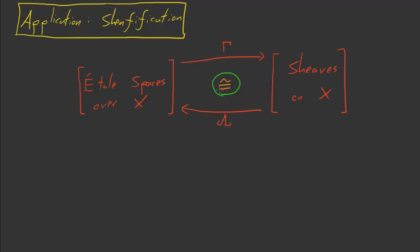I suppose they're useful for a lot of things, but one thing they're very useful for is taking categorical problems, constructions, observations, etc. in one category and porting them over to the other. Maybe something which was hard over in this category will become easy over in this category. Maybe some construction which was very complicated over here will become very easy over here.